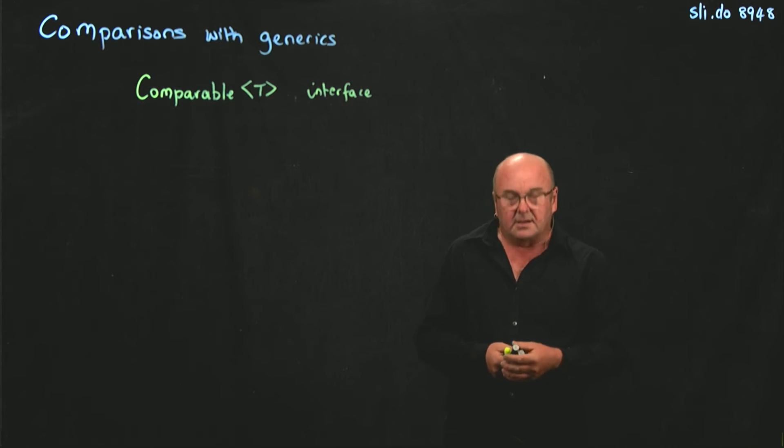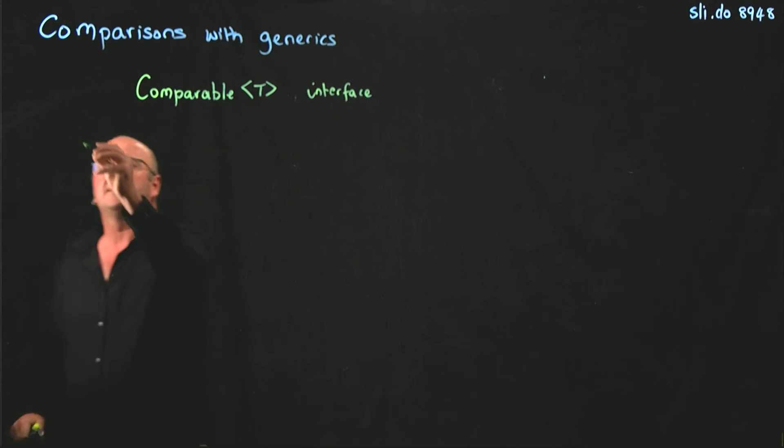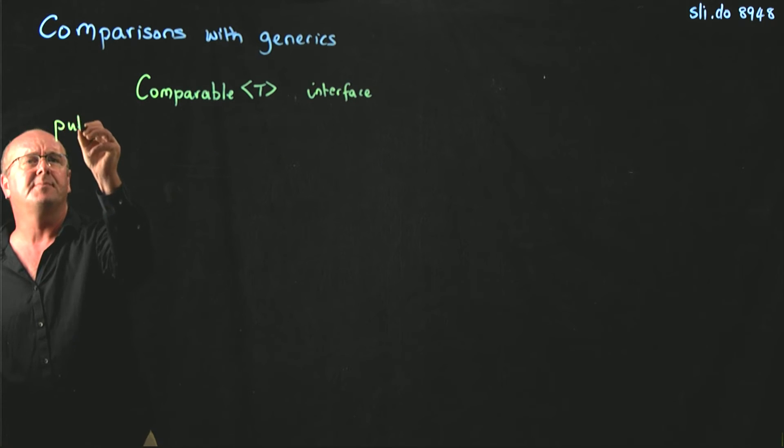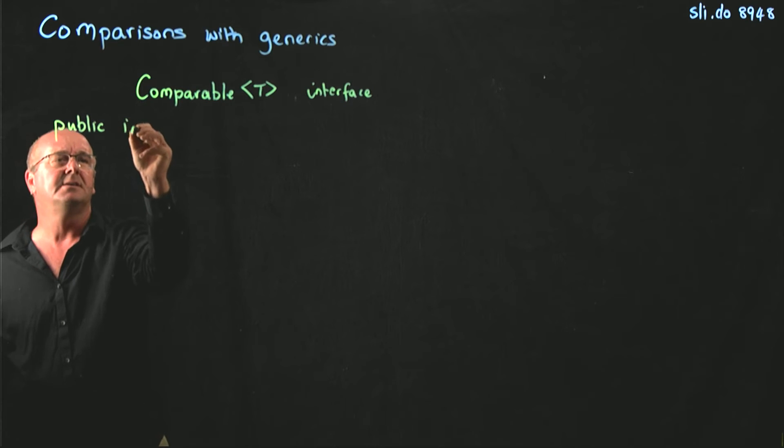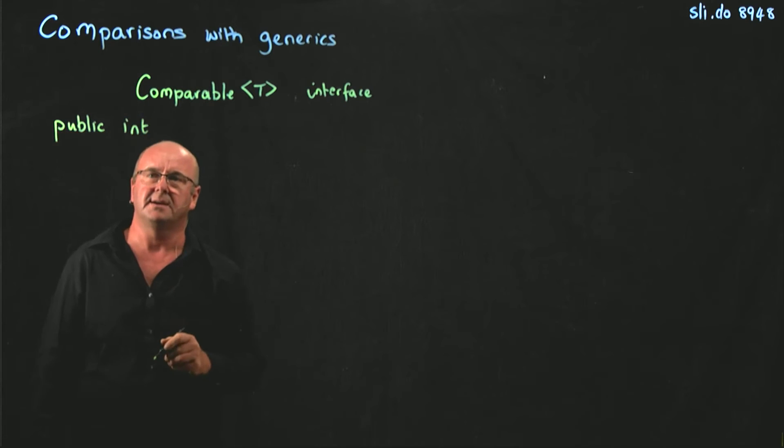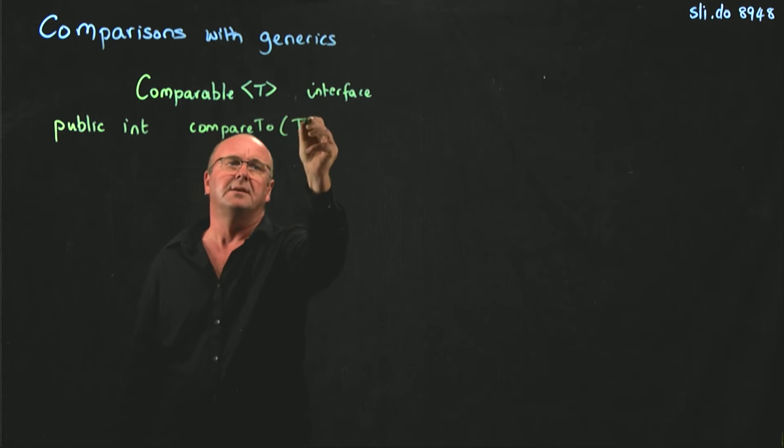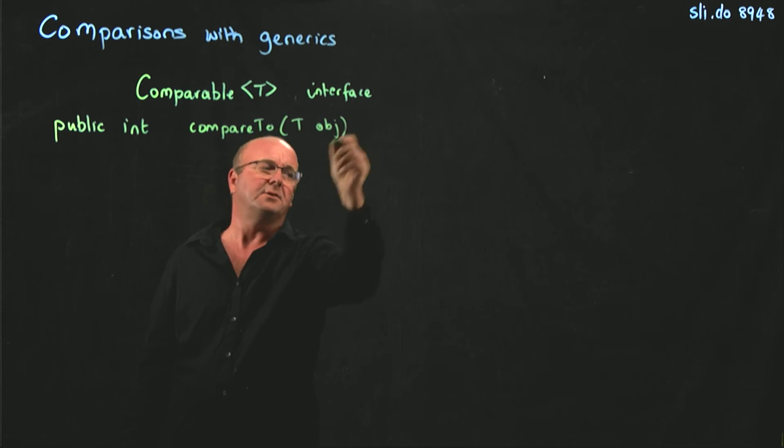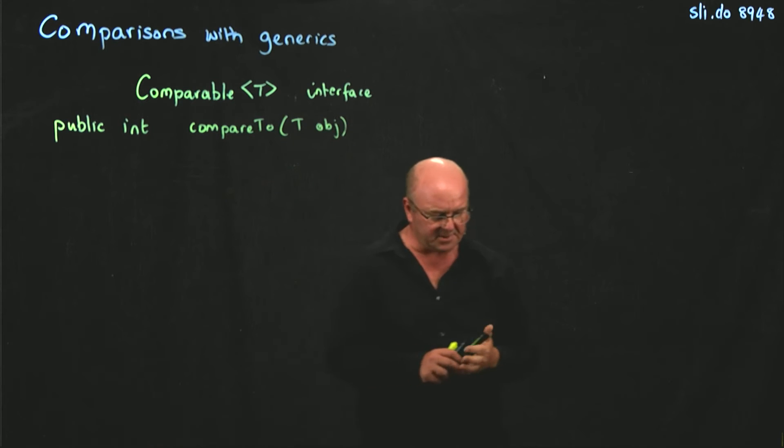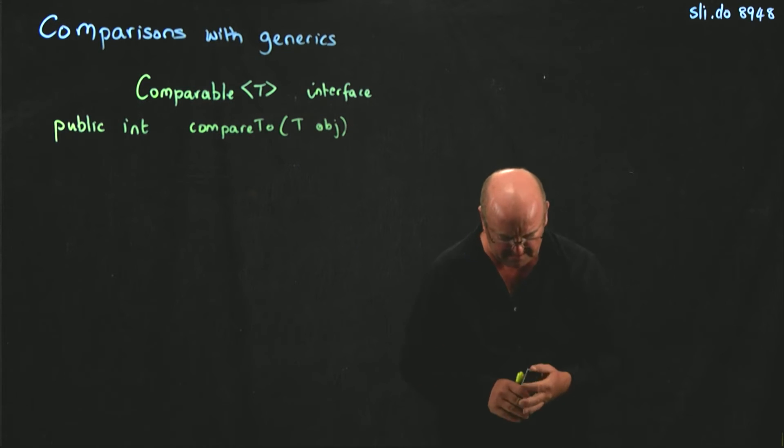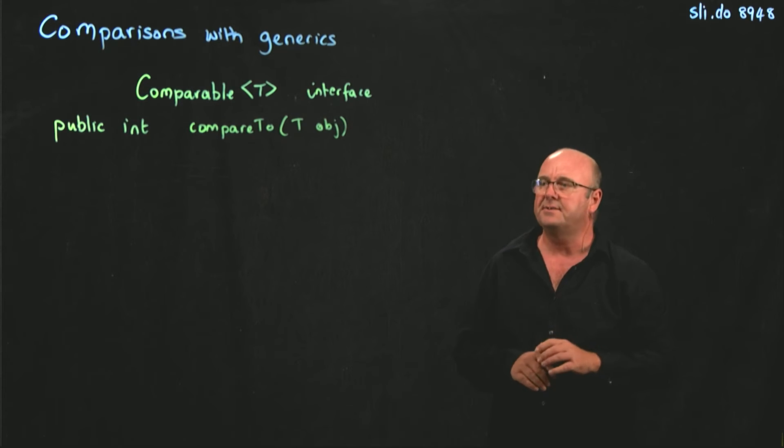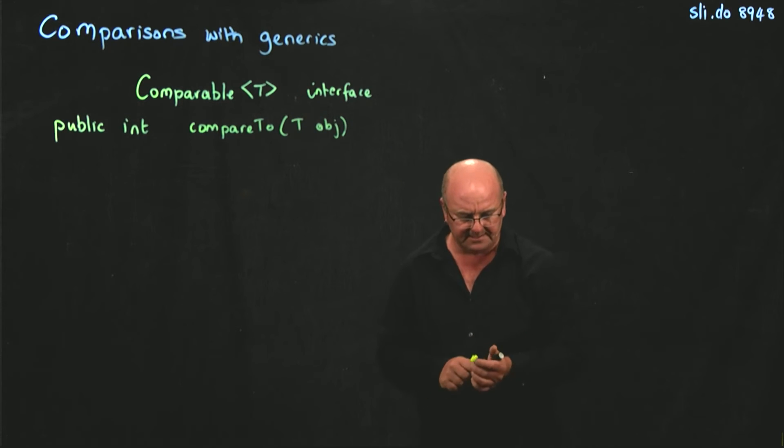The comparable interface only has one method. That method has a signature public int compareTo and then another kind of object of the same type. That's it. That's the only method that you need to implement the comparable interface.